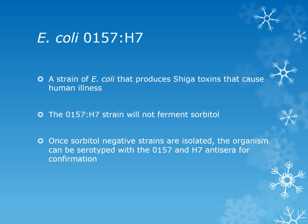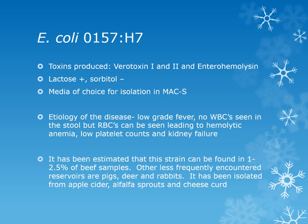The most clinically significant E. coli strain is O157:H7, an enterohemorrhagic strain that produces Shiga toxins causing human illness. O157:H7 will not ferment sorbitol, so it is colorless on MAC with sorbitol. Once we isolate a sorbitol-negative E. coli, we serotype it with O157 and H7 anti-sera using an agglutination test. O157:H7 produces toxins like verotoxin 1 and 2 and enterohemolysin; it is lactose positive and sorbitol negative, and the medium of choice for isolation is MAC-sorbitol.